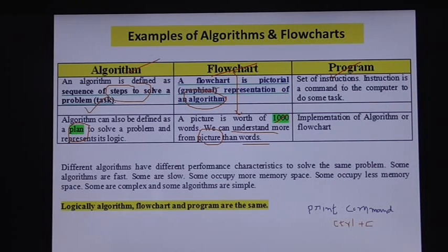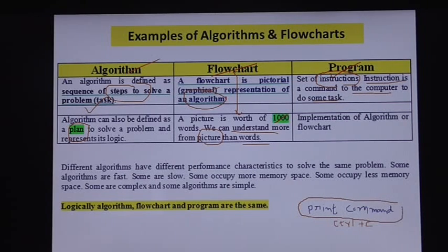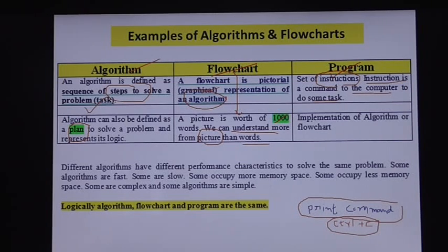Program is a set of instructions, and an instruction is a command to the computer to do some task. Suppose if you want to take a printout, we give a command to the computer to make a printout. Also, the implementation of an algorithm on a flowchart is a program.